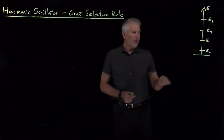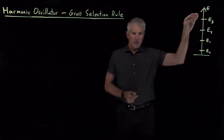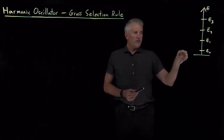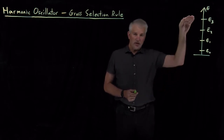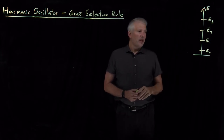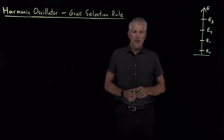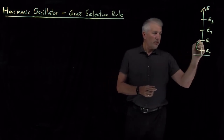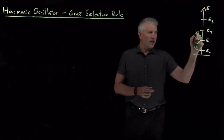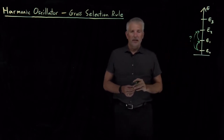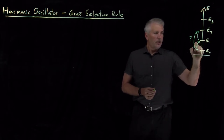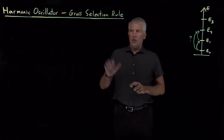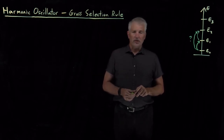We know that for a harmonic oscillator, the energy levels are equally spaced, and we know how to calculate the energy of each individual energy level. We've begun to talk about the frequencies of light used to make transitions between these various energy levels, but that leaves the question of which transitions are allowed. When we find the answer to that, we'll know what are called the selection rules for which transitions are allowed.